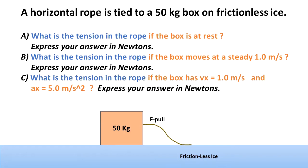We have a horizontal rope that is tied to a 50 kg box on a flat frictionless ice surface. We are going to analyze three different cases for this box.